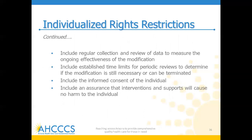So the plan is: let's try an intervention, collect data on it, review it, review ongoing whether or not the support we're providing is working so that the individual can ultimately have that right restored. We're going to establish time limits and periodic reviews — it's not something that goes away entirely forever. We reassess and reengage if there's a new intervention that needs to be applied. All of this process has to be supported by the individual member and their family or responsible party, and we need to ensure that whatever interventions are applied don't cause harm to the individual.